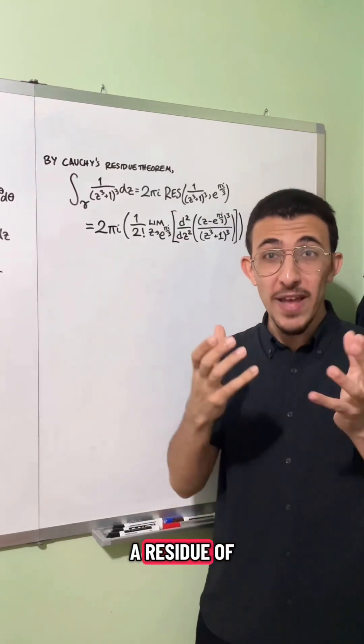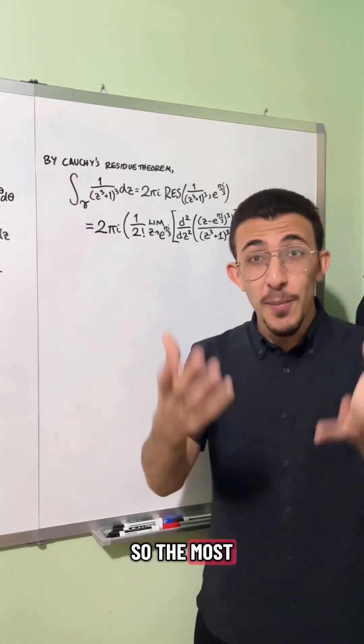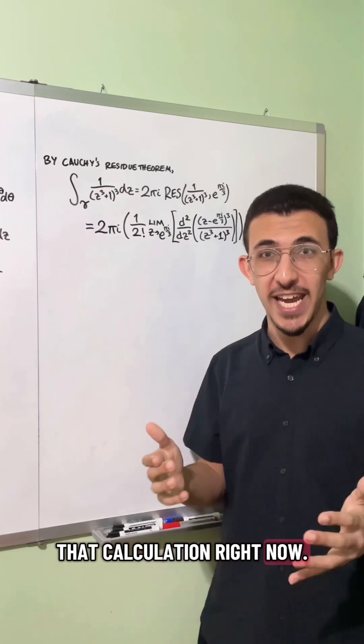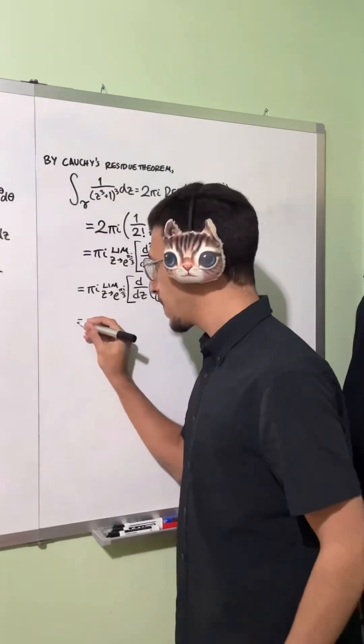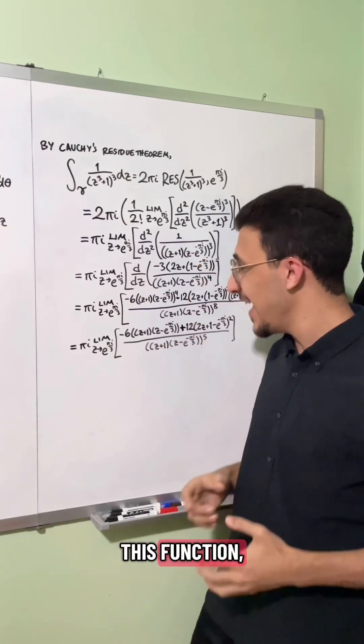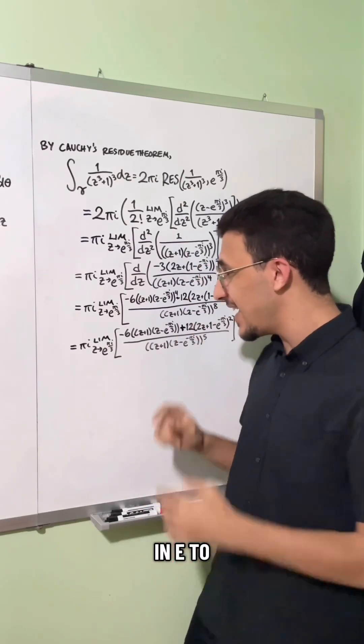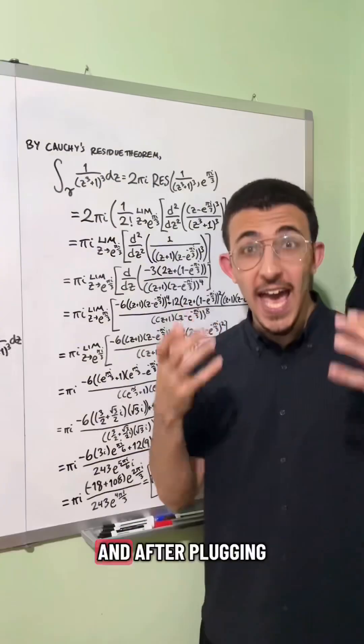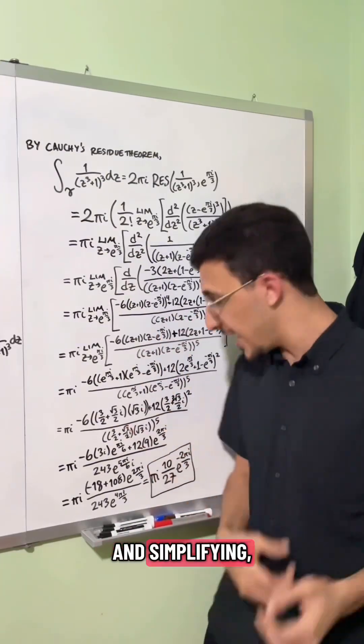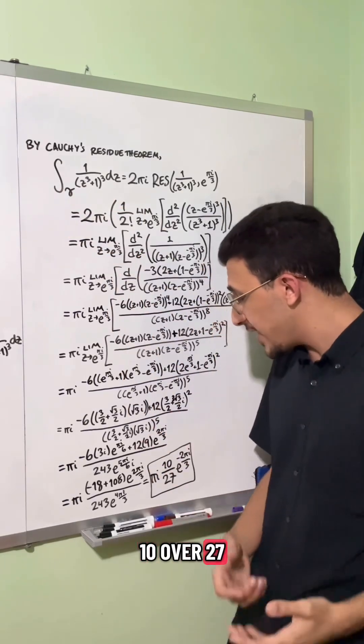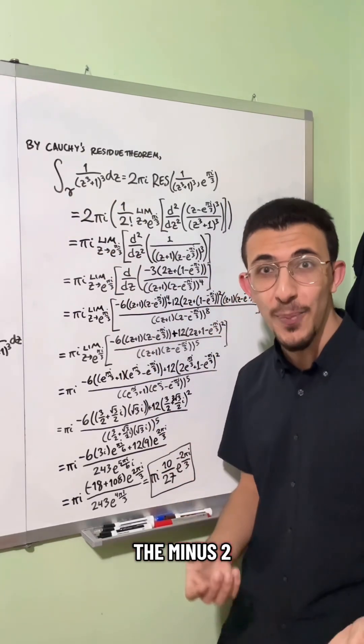So this is the formula for a residue of a pole of order three. So the most difficult part is going to be computing this second derivative. I'll go through that calculation right now. I computed the second derivative of this function and now all I have to do is plug in e to the pi i over three. And after plugging in the limit and simplifying, we get that this contour integral is equal to pi i times 10 over 27 times e to the minus two pi i over three.